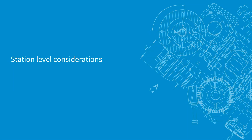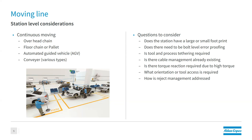In this section we're going to look at the assembly type and things we need to be thinking about for whatever assembly type you're responsible for, to give an idea of what type of system or application we can provide. The first one is moving lines — overhead chain, floor chain, pallet, AGV, conveyor — these are the continuous moving applications you might see in the environment.